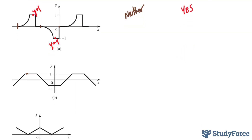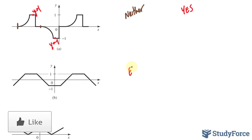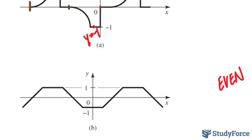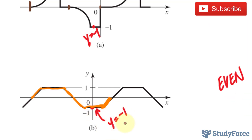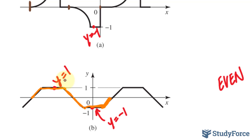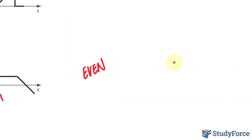For the next waveform, reflecting along the y-axis produces an identical result, so right away I know this is even. To test for half-wave symmetry, identify where the cycle starts and stops. Selecting a point on the negative portion with y-coordinate negative 1, half a cycle away gives y-coordinate positive 1. Same magnitude, opposite signs — therefore this is indeed a half-wave symmetry.